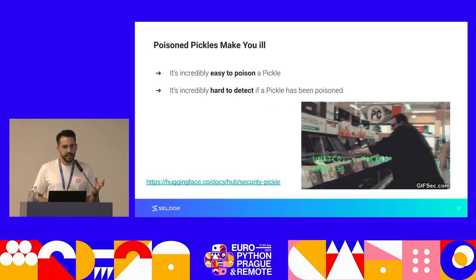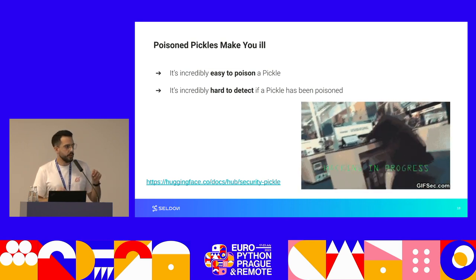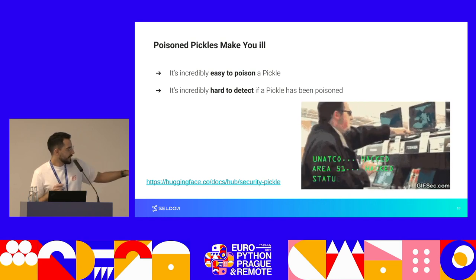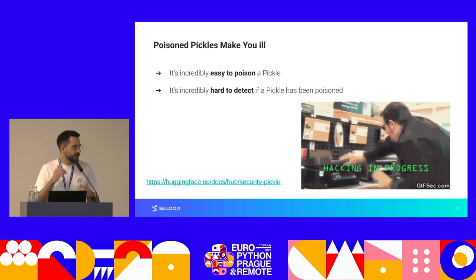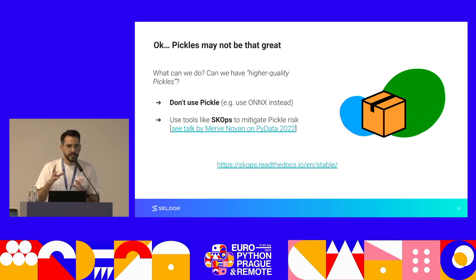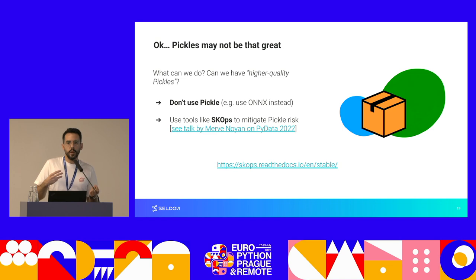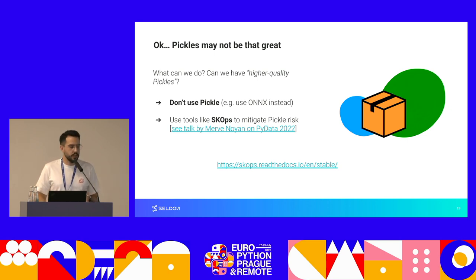We try to load this poisoned artifact and reload it in the server — and we can see that the 'pwned.txt' file has been created. Our environment has been dumped. What we've seen is that it's incredibly easy to poison a pickle and incredibly hard to detect if one has been poisoned. For more on why, check out the link from the HuggingFace docs. So what can we do? Option one: don't use them — use something like ONNX, a serialization format that doesn't need code execution. Option two: use tools like skops, which mitigates the risk carried by pickle for scikit-learn models.